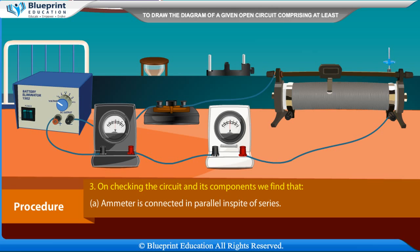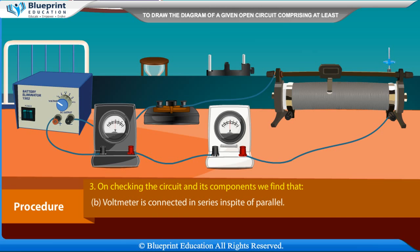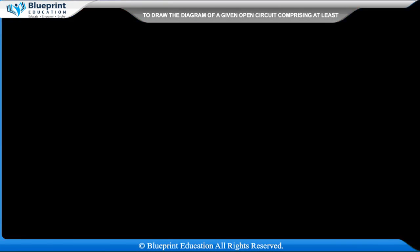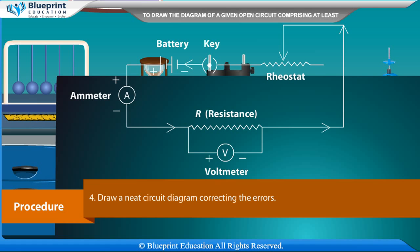Ammeter is connected in parallel instead of series. Voltmeter is connected in series instead of parallel. In the voltmeter and ammeter, the current is entering from the negative terminal instead of the positive terminal. Draw a neat circuit diagram correcting the errors.